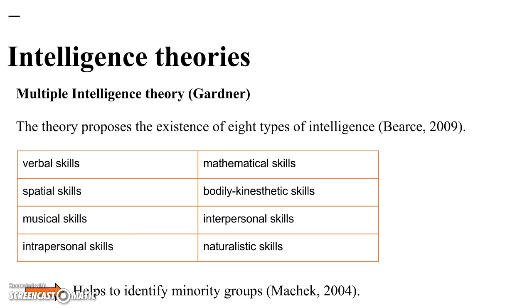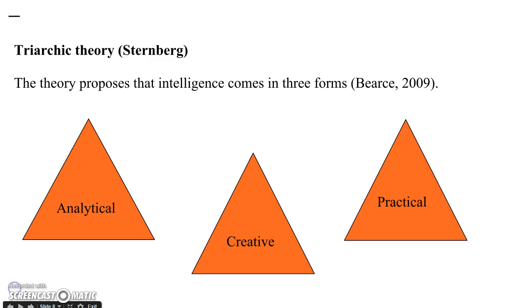Naturalistic skills is the ability to observe patterns in nature and understand natural and human systems. One advantage of Gardner's theory is that it helps to identify minority group individuals who were under-identified with conventional approaches. The second theory is Sternberg's triarchic theory, which proposes that intelligence comes in three forms. The first, analytical, is defined as the ability to acquire and store information, retain or retrieve it, or transfer information.